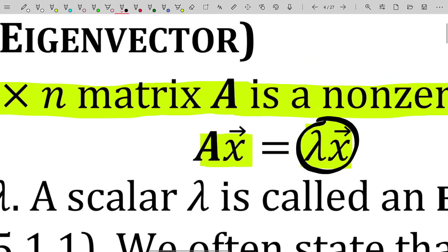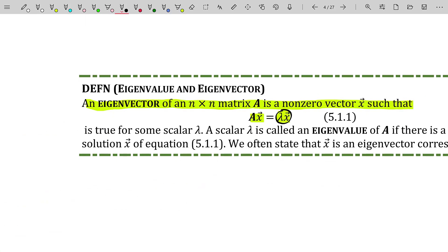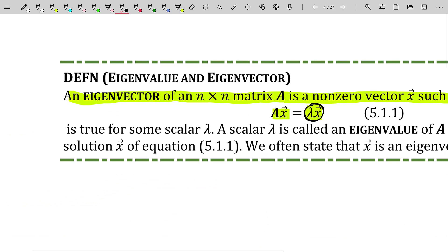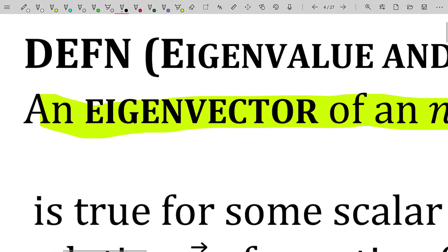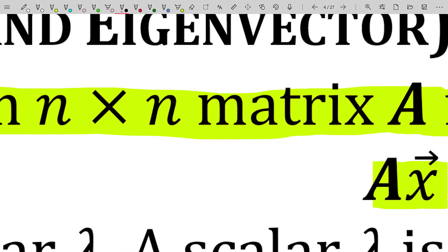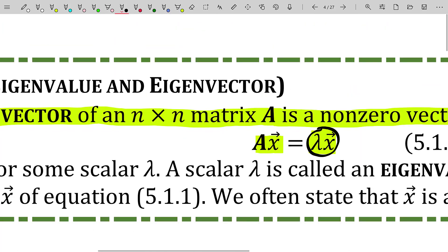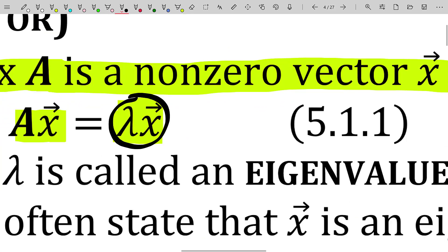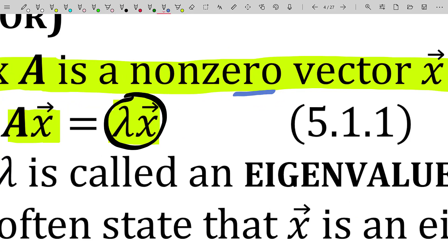A couple of things I want to mention before I continue with the definition. The eigenvector only exists for an n by n matrix, a square matrix. I'm not telling you that matrix has to be invertible. I'm just telling you that it has to be square. Also, it's critical to note the eigenvector is non-zero. That's very important. There is no such thing as a zero vector eigenvector.